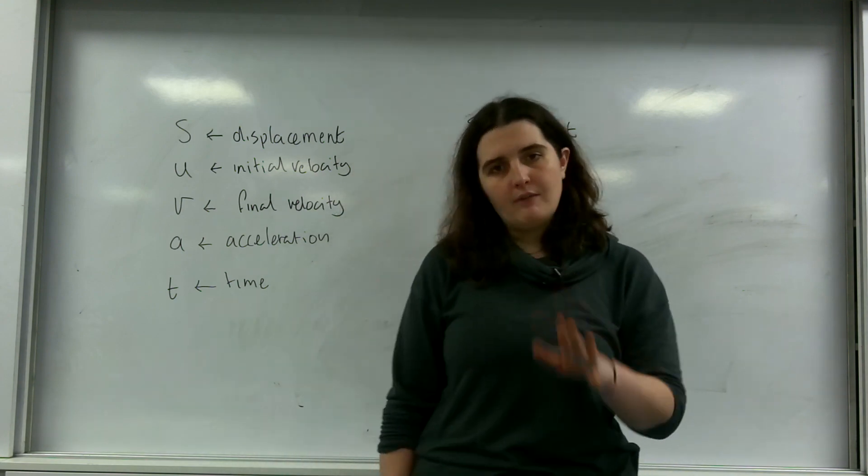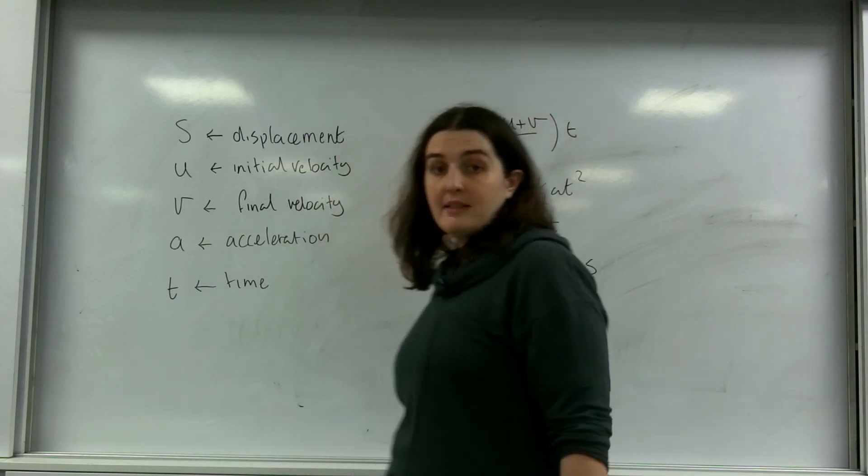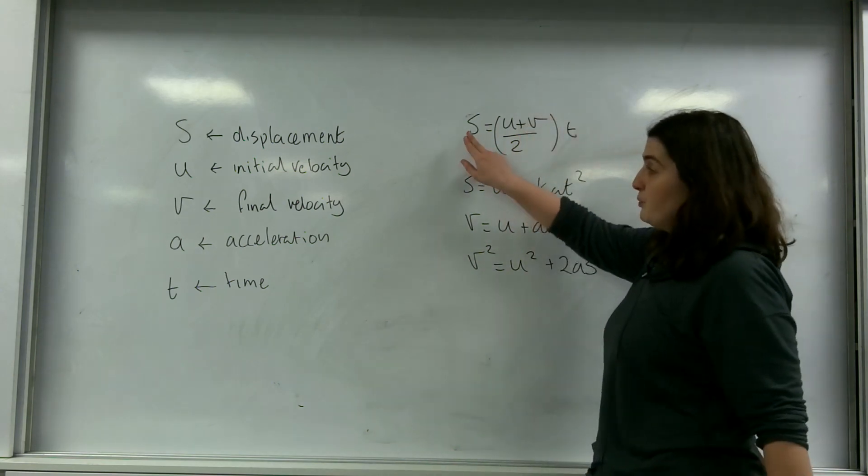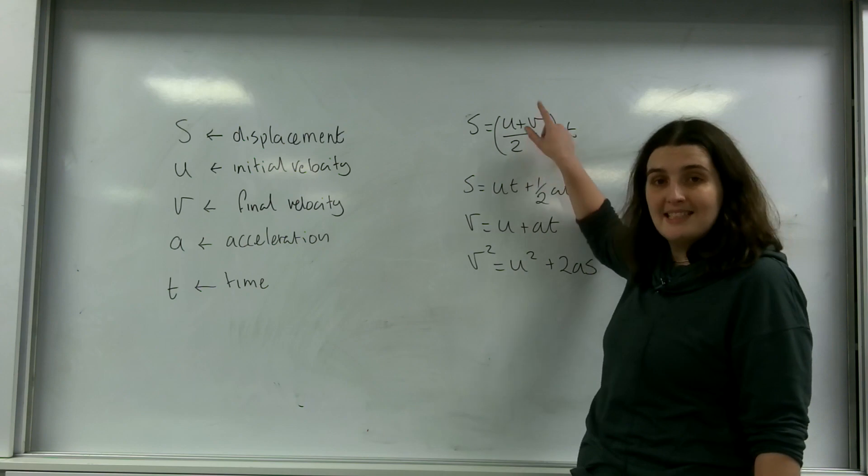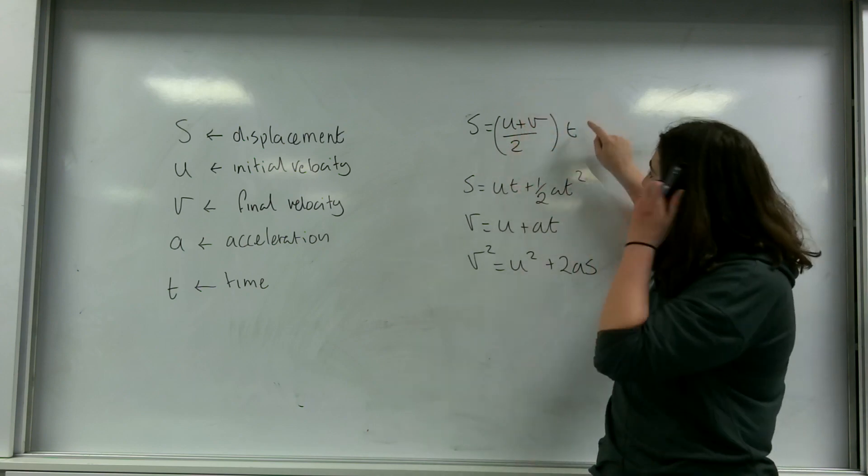There are four formulae that are given to you in the data sheet. First, displacement is the initial plus the final velocity over T, so it's the average of the velocities times by time.